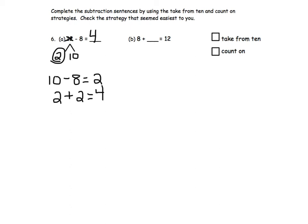In B, we are doing 8 plus something equals 12. We are going to do the count on strategy. We start with the number 8.